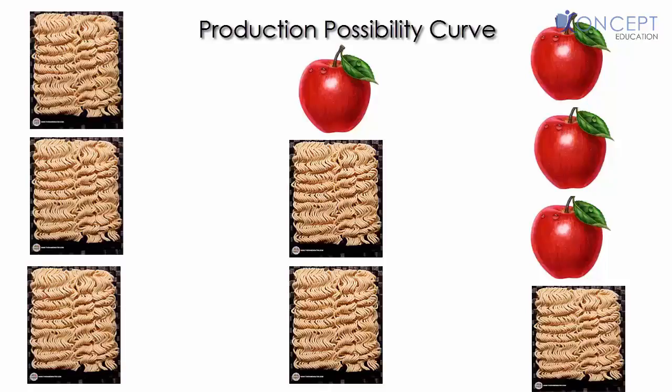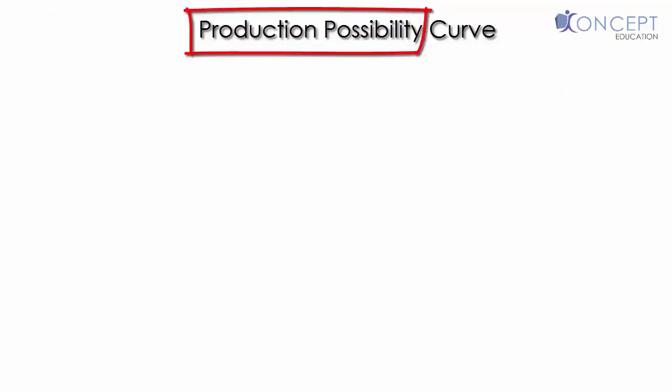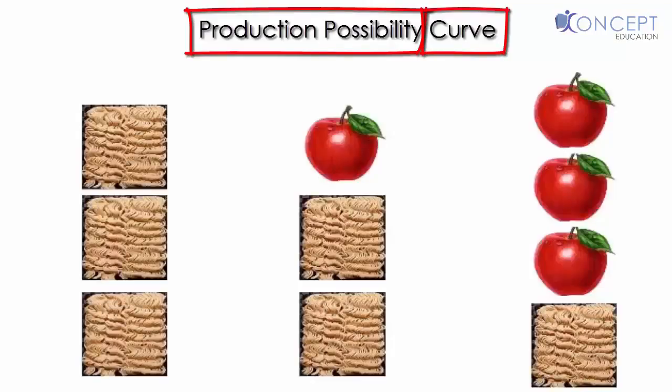So this is in short a short version of Production Possibility Curve. I can break it down: Production Possibilities and Curve. Production Possibilities are these different options: three Maggie zero apple, two Maggie one apple and one Maggie three apple. And when I put it down on a graph, then I can add the third word, Production Possibility Curve.